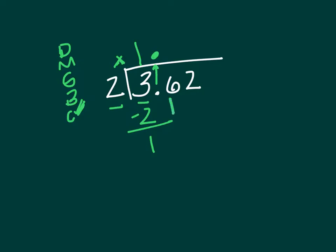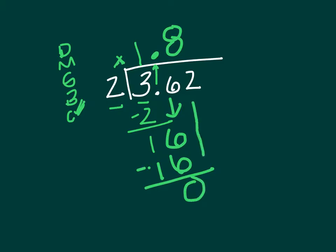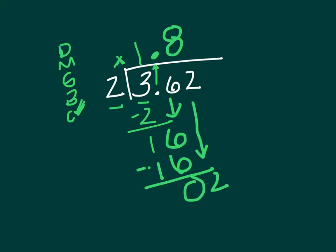Bring down the 6. 2 goes into 16 eight times, 8 times 2 is 16. Subtract, that's 0. Bring down the 2. Gotta go smaller still.